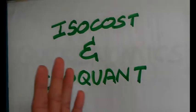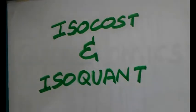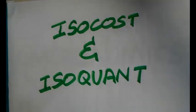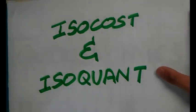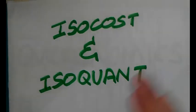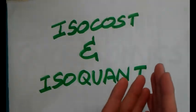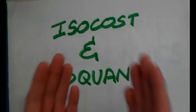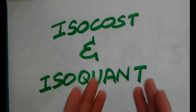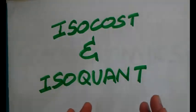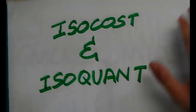Congratulations for successfully completing Chapter 2. We now move on to Chapter 3, and the first topic will be the Isocost and the Isoquant. The Isocost and Isoquant are actually very similar to our budget constraint and our indifference curve. The Isocost is the firm's budget constraint and the Isoquant is the firm's indifference curve.